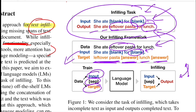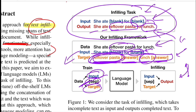Once training is done and the model has achieved good perplexity, for any test sentence you provide the input, and as soon as the separator token is provided as the end of the input sequence, the model starts generating output. You can then post-process and extract the filled segments — for example, 'leftover pasta' and 'lunch' — by splitting on the answer token.